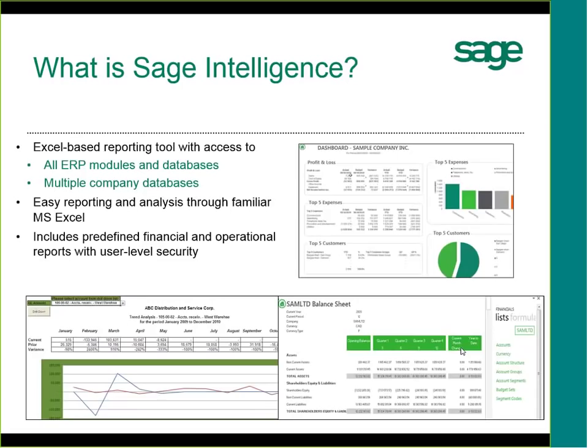SAGE Intelligence makes connections to additional sources — databases outside the ERP. It comes shipped with connections to the SAGE ERP: 100, 300, 500, X3. But we also enable you to connect to other databases and data sources outside the ERP — for example, other SQL databases, maybe CRM, SAGE CRM, or data within an Excel file. SAGE Intelligence comes with predefined financial and operational reports.